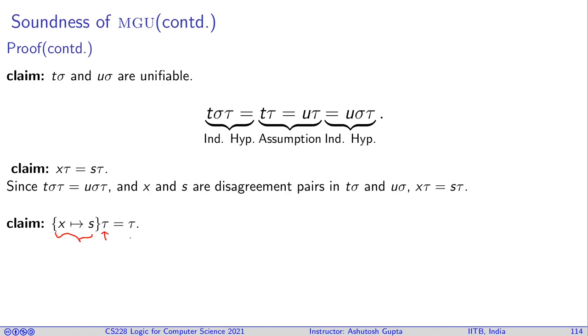Using the above fact, I can say that if we take a substitution x maps to s and we compose with this tau, it should return tau. How do I prove that? Let's suppose we take a variable y and we try to see where does it get mapped. If y is x, then I apply this composition on y. Since y is x, the result is s, and now s tau is x tau, so therefore I can simply derive y tau. That means applying this composition on y gives me the effect of tau.